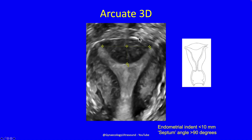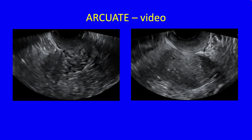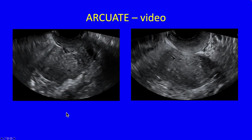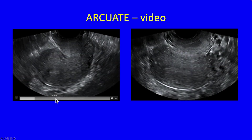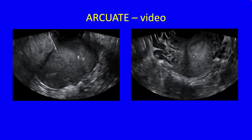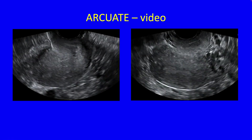In an arcuate uterus you've still got a convex uterine contour, but you've now got a dip in the endometrial cavity. This is allowed to be up to 10 millimetres, and this angle has to be more than 90 degrees for it to be arcuate. Arcuate is incredibly common. In this video clip of an arcuate uterus, you can see the uterine cavity going one way in the longitudinal plane, and in the transverse plane the two cavities come together very quickly. That's an arcuate uterus — very common.